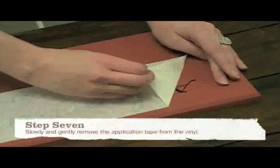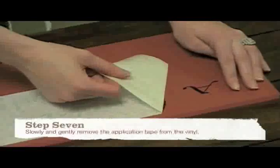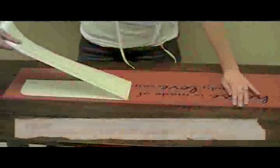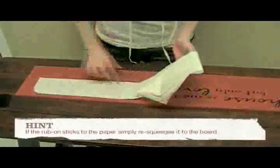Step 7. Slowly and gently remove the application tape from the vinyl. If the rub-on sticks to the paper, simply re-squeegee it to the board.